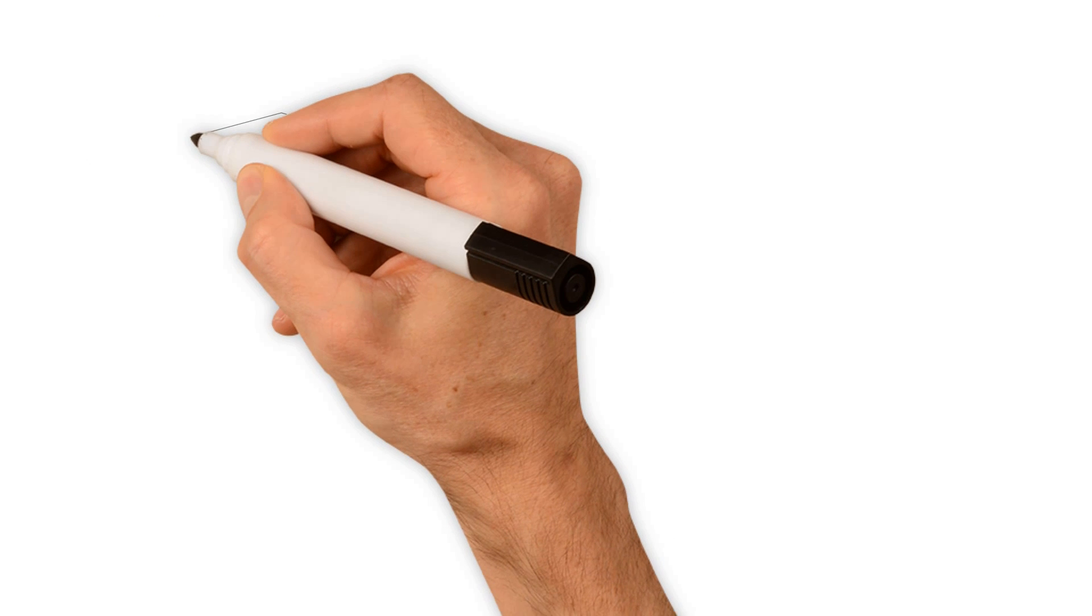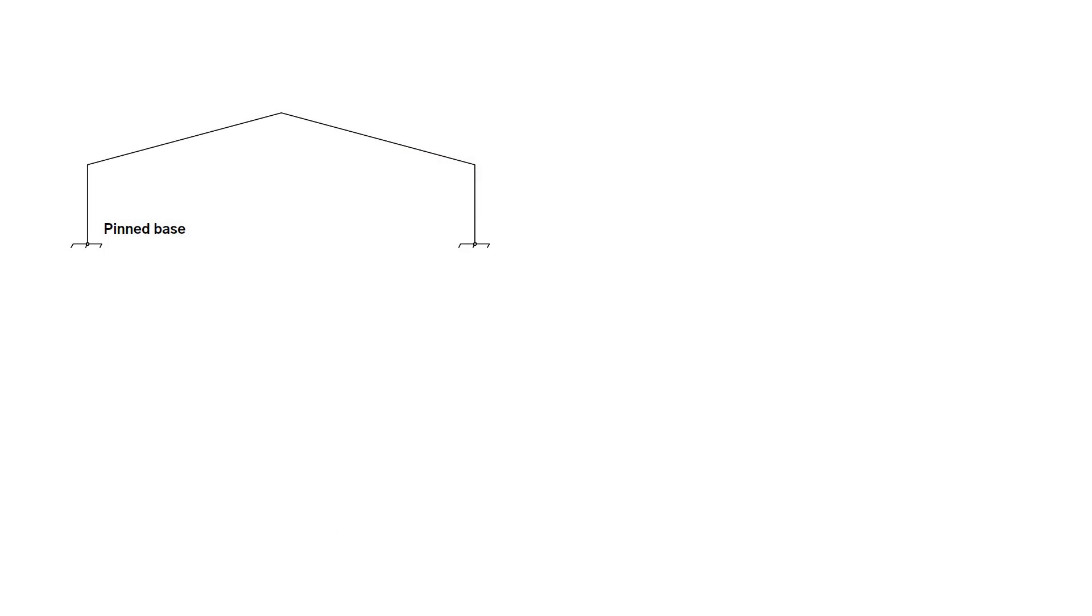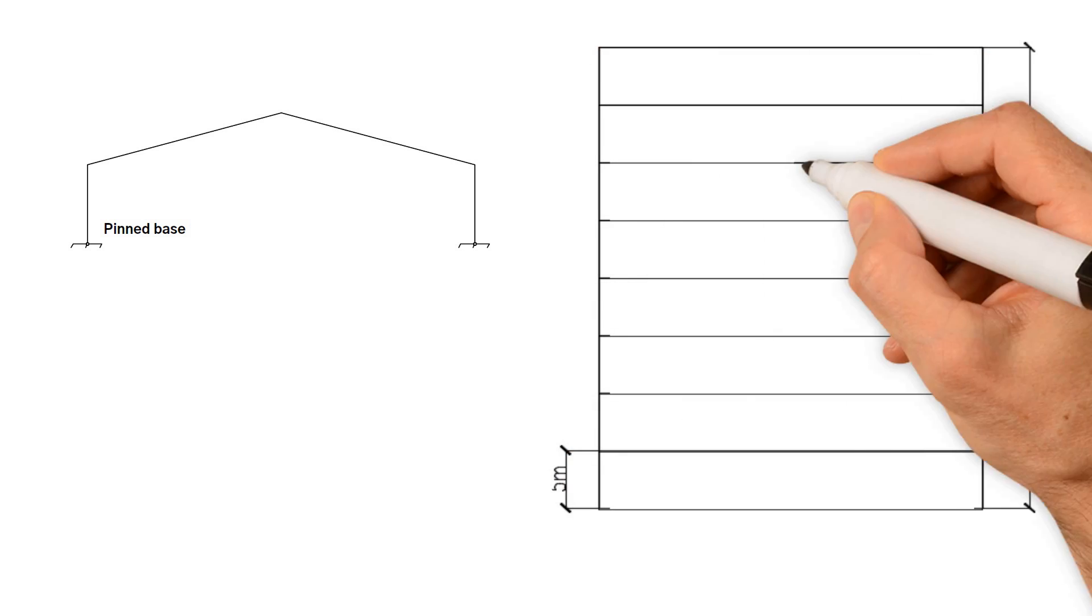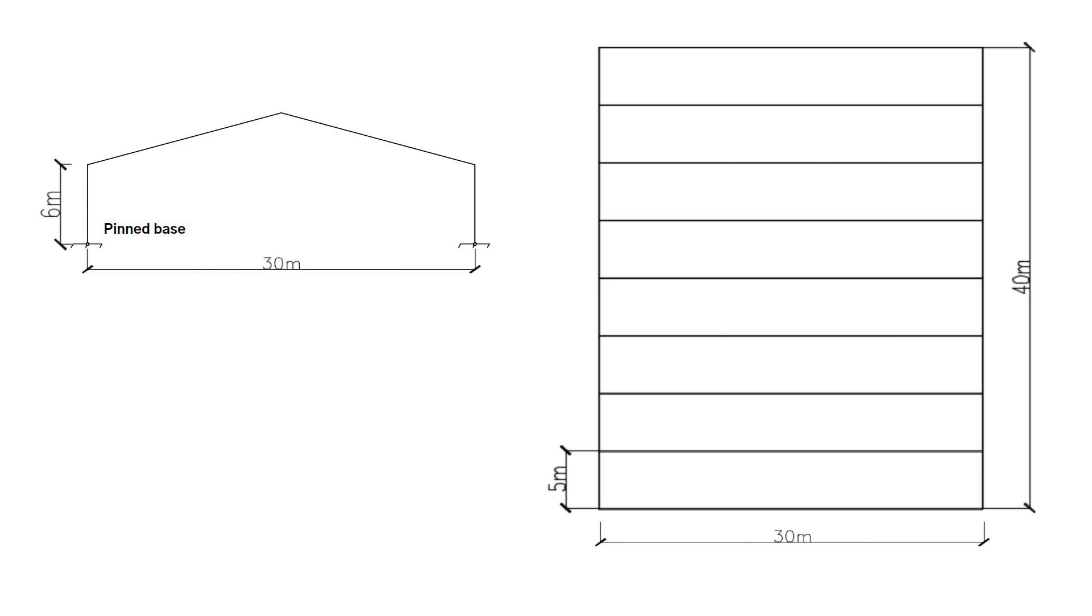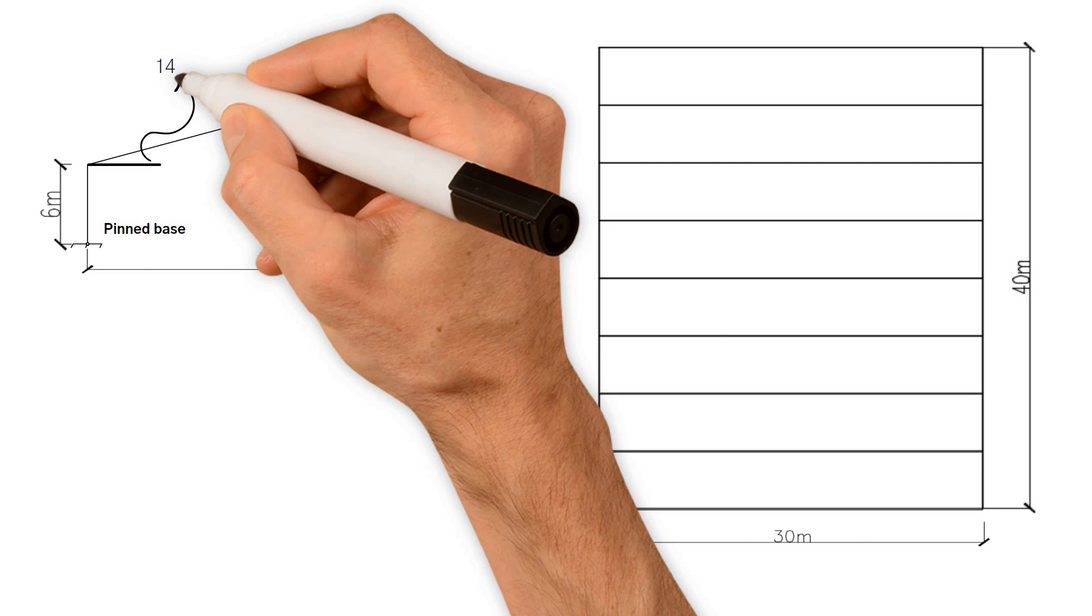Let's start with the following application example. The proposed pinned base portal frame for an industrial building is defined at the concept design stage by the line diagram, where the lines represent the centerline of the members. The portals are at 5 meters centers, and the length of the building is 40 meters. The building width is 30 meters, 6 meters height to eaves, 10 meters height to roof top. The angle of inclination of roof is 14.9 degrees.